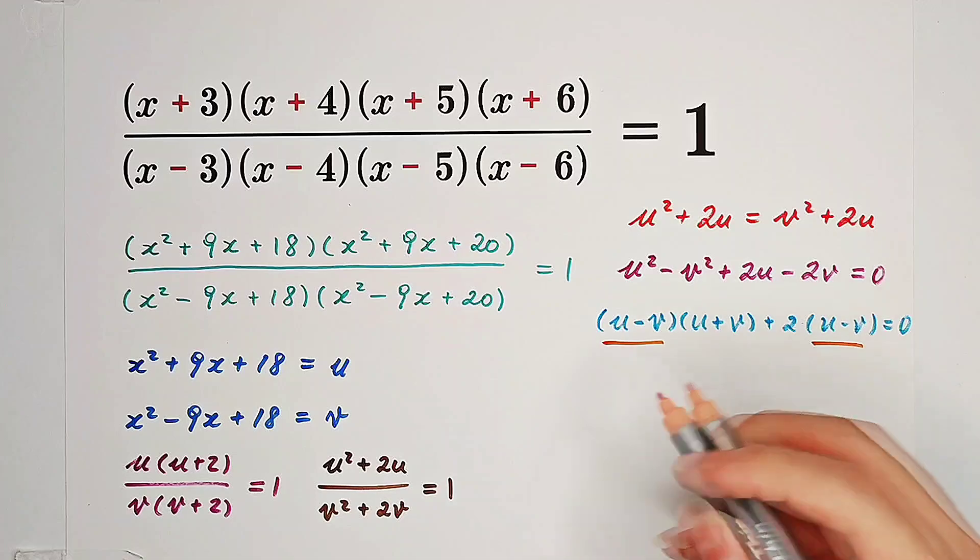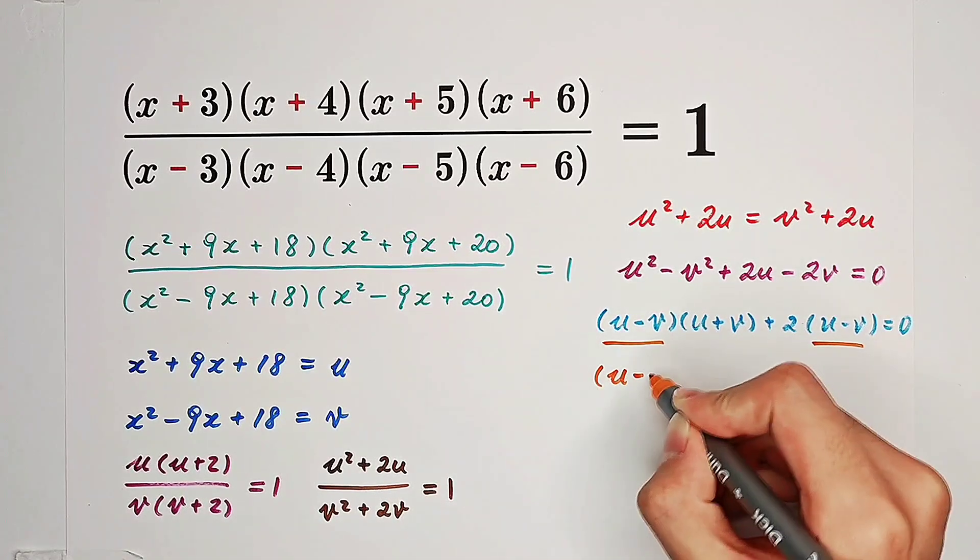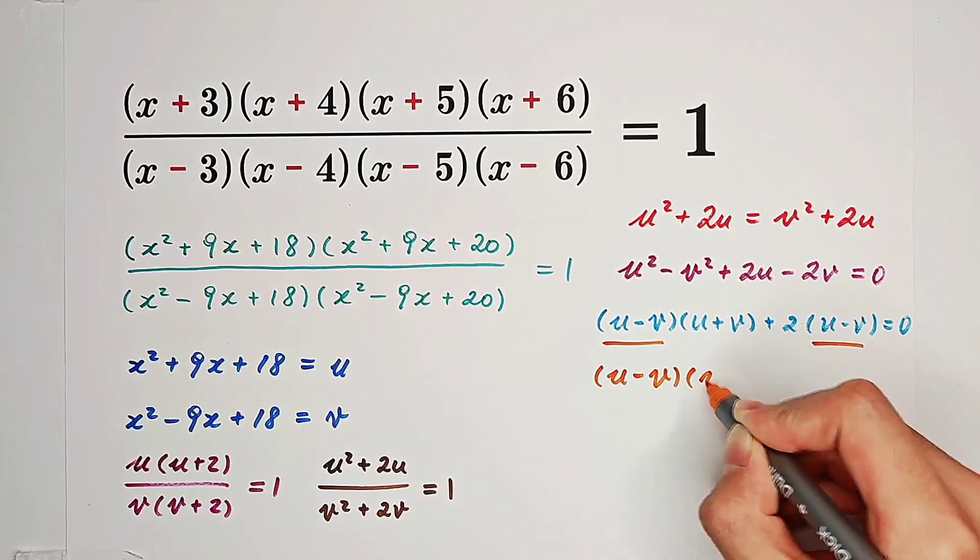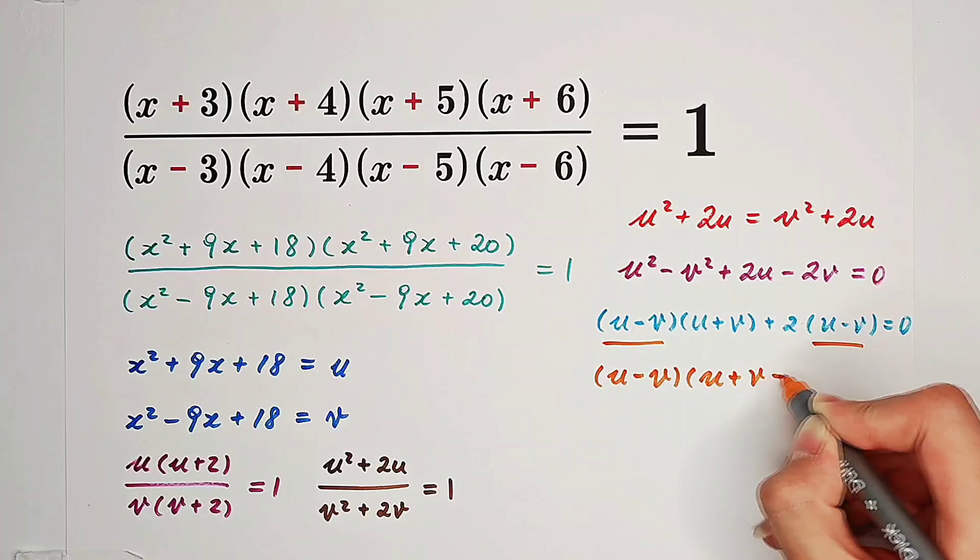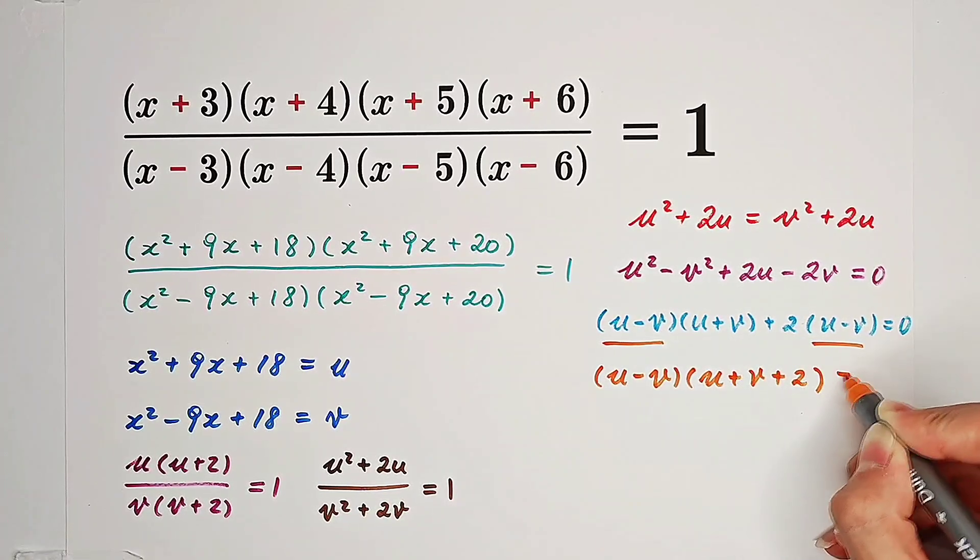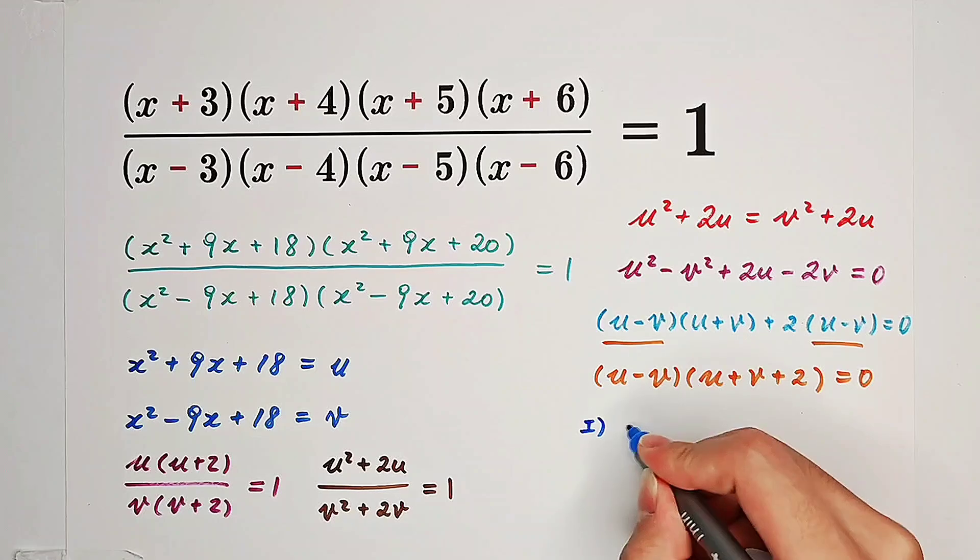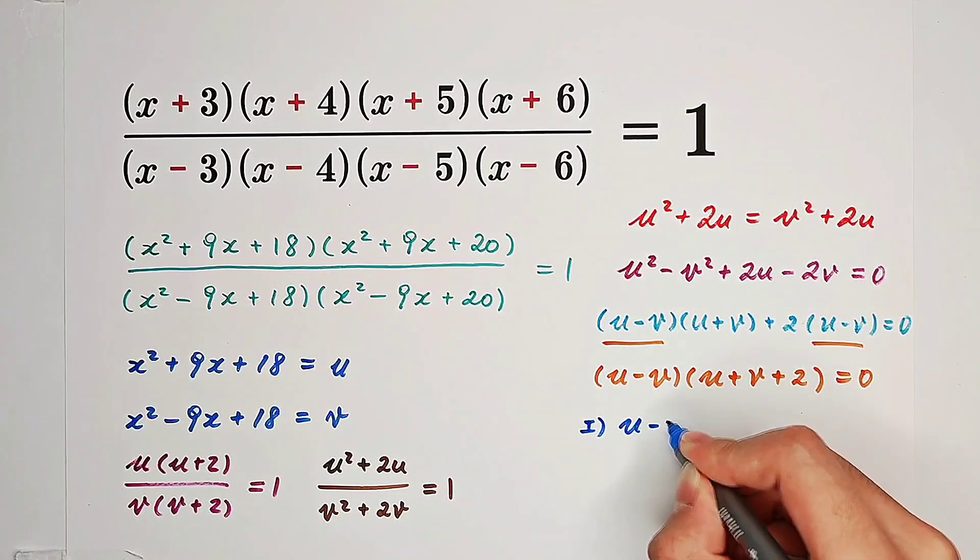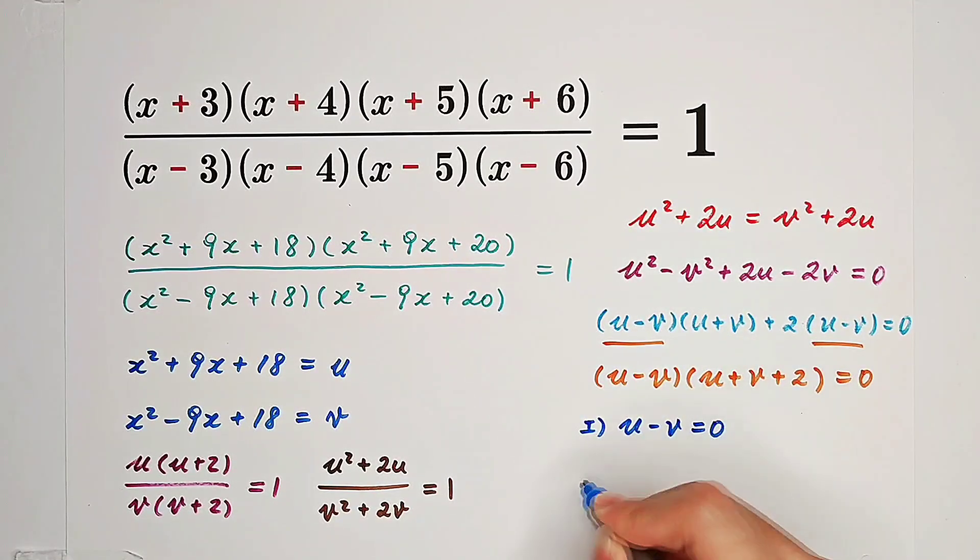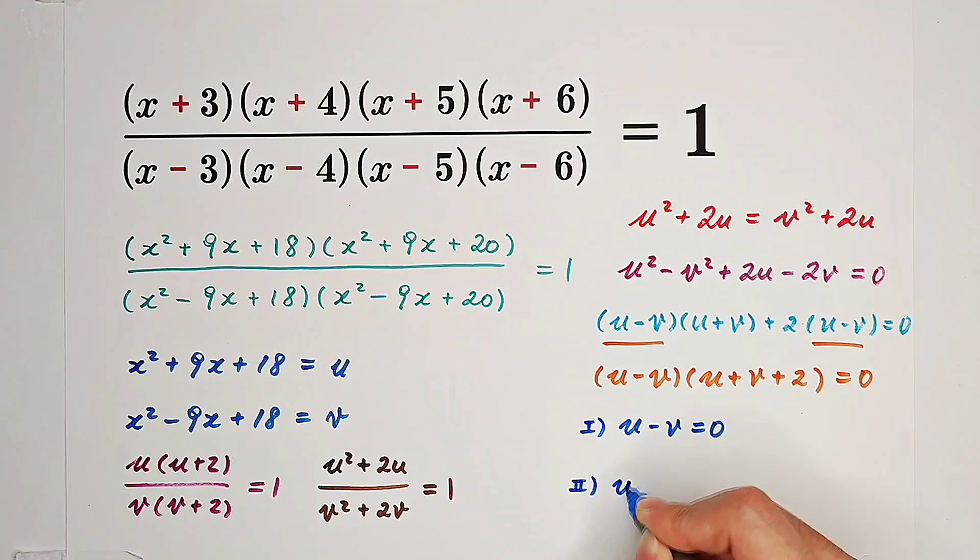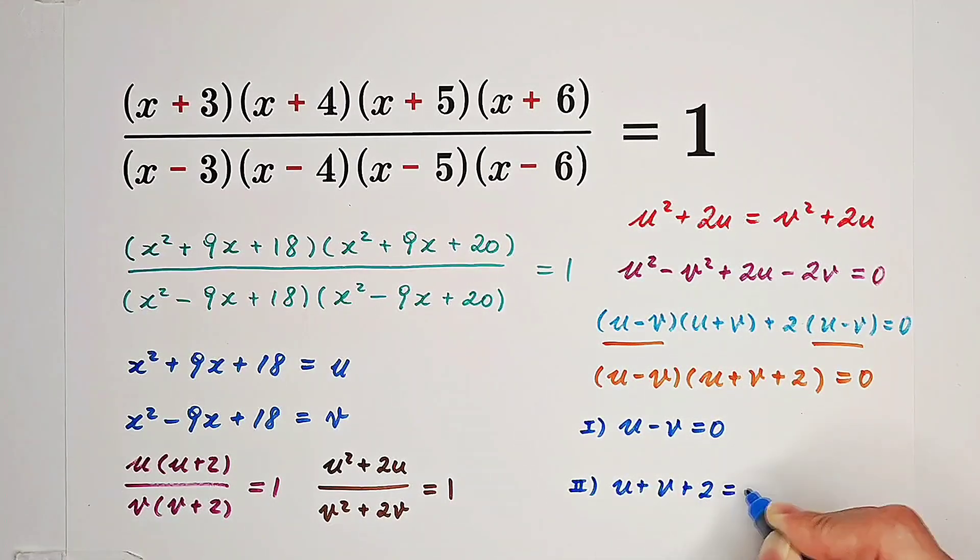Now if we take out u minus v, it is u minus v times u plus v plus 2. That means we have two cases: u minus v equals 0, or u plus v plus 2 equals 0.